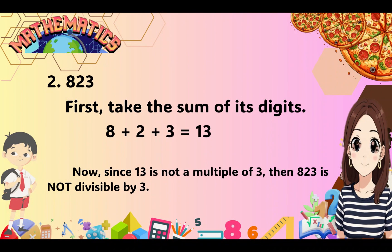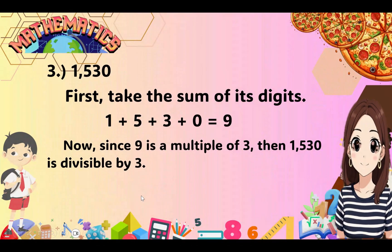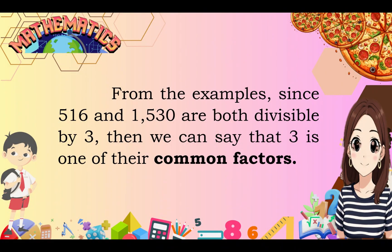For number 2, 823: take the sum — 8 plus 2 plus 3 equals 13. Since 13 is not a multiple of 3, then 823 is not divisible by 3. For number 3, 1530: take the sum of its digits — 1 plus 5 plus 3 plus 0 equals 9. Since 9 is a multiple of 3, then 1530 is divisible by 3. Since 516 and 1530 are both divisible by 3, we can say that 3 is one of their common factors.